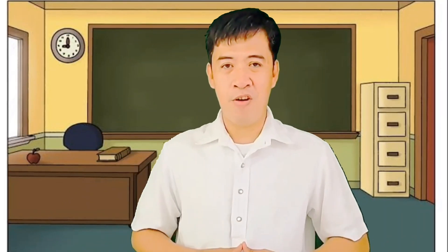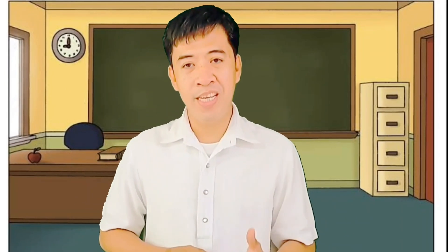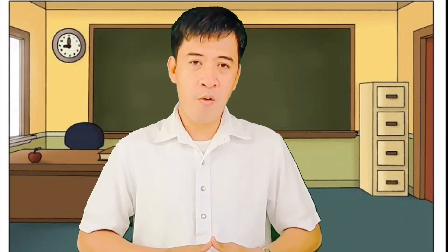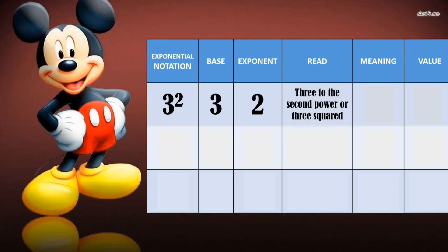Let's study this table. The table shows some examples of exponential notation, how to read it, its base, its exponent, its meaning, and its value. The first one: the base is 3 and the exponent is 2. We read it as 3 to the 2nd power or 3 squared. Meaning, we multiply it 2 times by itself: 3 times 3, and the value is 9.